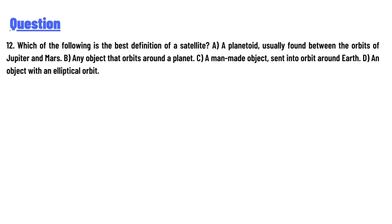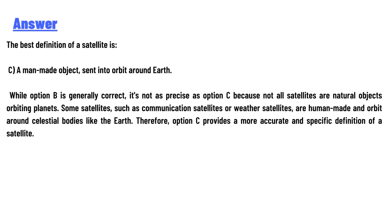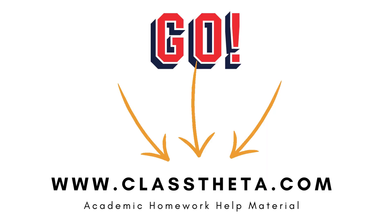The answer is C — a man-made object sent into orbit around earth. While option B is generally correct, it's not as precise as option C, because not all satellites are natural objects orbiting planets. Some satellites, such as communication satellites or weather satellites, are human-made and orbit celestial bodies like the earth. Therefore, option C provides a more accurate and specific definition of a satellite.